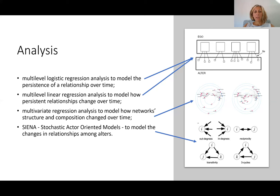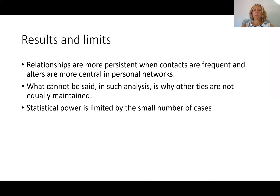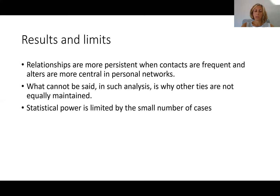The advantage of this approach is that it gives much more robust results in terms of the changes in the Egonets — it's not just descriptive; we can compare our descriptions against statistical probability that these changes might happen or not. For example, they found that relationships are more persistent when contacts are frequent and alters are more central in personal networks. However, the limits of this analysis include the fact that with only 25 Egonets, the statistical power is very limited, so we cannot really generalise much beyond the 25 cases collected.